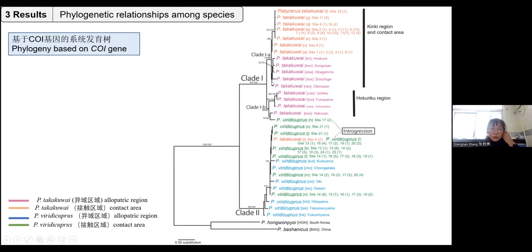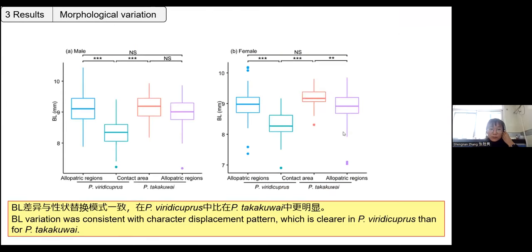We then looked at the COI gene phylogeny. There are two branches for P. takakuwai — 1-A and 1-B — and P. variegatus cupreus falls in branch 2. We found that at site 9, two samples identified as P. takakuwai by morphology showed COI results placing them in the P. variegatus cupreus branch. Also, two samples from site 17 identified as P. variegatus cupreus showed COI placing them in the 1-B branch of P. takakuwai. This indicates there is some gene introgression between these two different species.